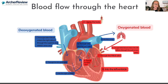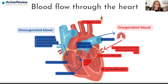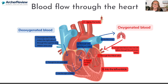Let's go through it just one more time because this is important. Deoxygenated blood returns to the right atrium from the superior and inferior vena cava. It passes through the tricuspid valve into the right ventricle, through the pulmonic valve into the pulmonary artery, and out to the lungs — where our deoxygenated blood gets to pick up oxygen.